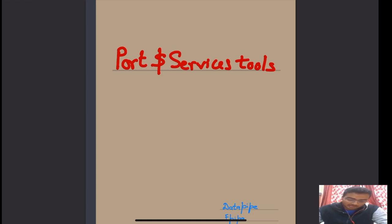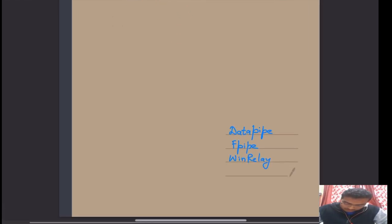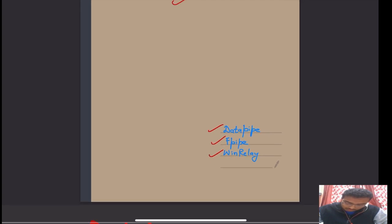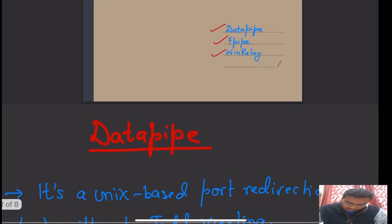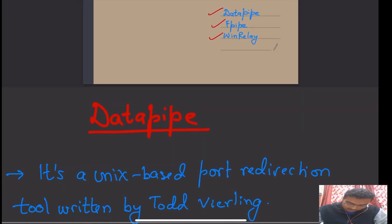Hello everyone. In the series of network security, the next topic we're going to cover is port and services tools, under which we'll be seeing data pipe, f pipe, and win relay. Today we'll be covering data pipe. So what exactly is data pipe?